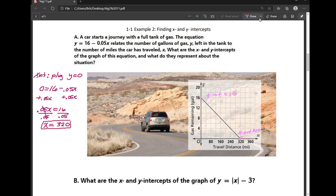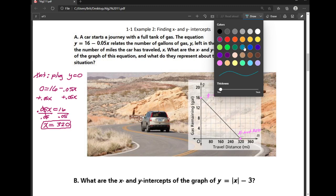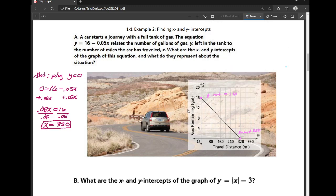Now to find the y-intercept, the y-intercept is actually very similar. So the y-intercept is where my x value equals zero. So to find the y-intercept, I'm going to plug in x equals zero. So I have my equation, y equals 16 minus 0.05 times zero. Anything times zero is zero, so that just goes away, leaving me with y equals 16, which we saw by looking graphically here.